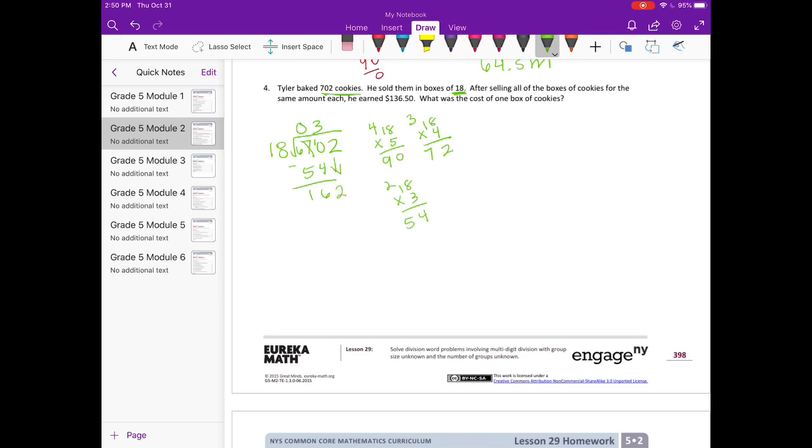So 18 could go into 162. Let's see. 18 times 5 was 90. So let's try like 18 times 8. 64. 8 times 1 is 8 plus 6 is 14. Let's just check and see if it could go in one more time. Yep, it can go in that 8 times plus 1 more would be 9 times. 9 times is 162.